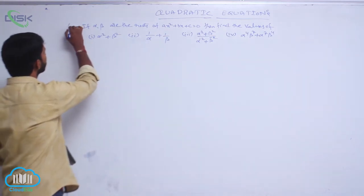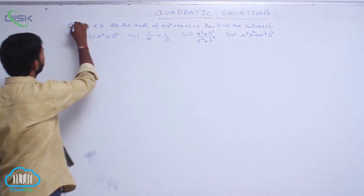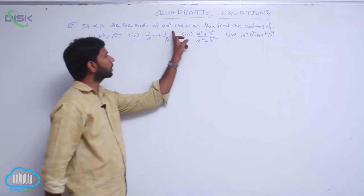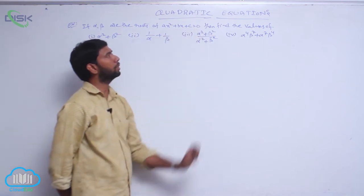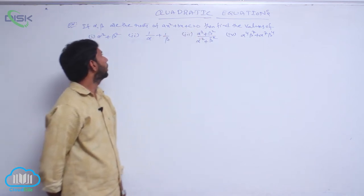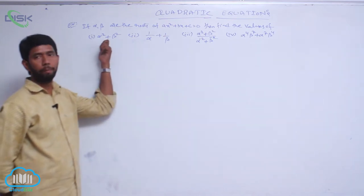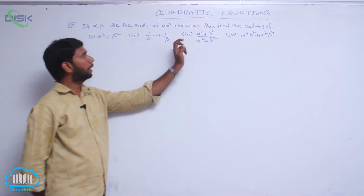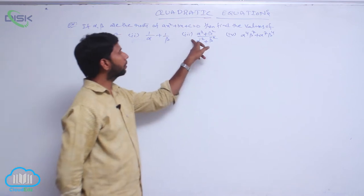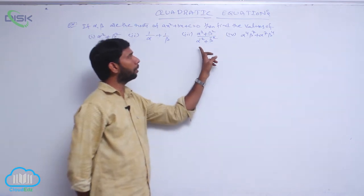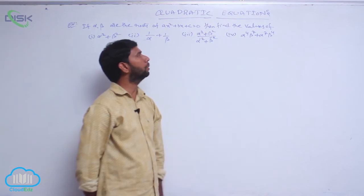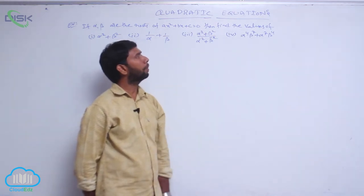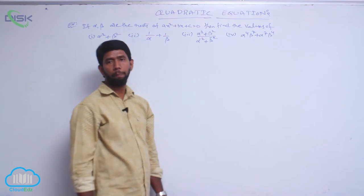If alpha, beta are the roots of equation ax squared plus bx plus c equal to 0, then find the values of: alpha squared plus beta squared; 1 by alpha plus 1 by beta; alpha squared plus beta squared by alpha power minus 2 plus beta power minus 2; and alpha power 4 beta power 7 plus alpha power 7 beta power 4.